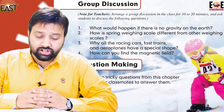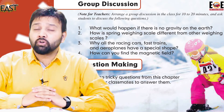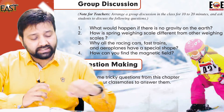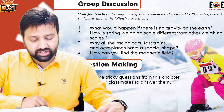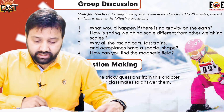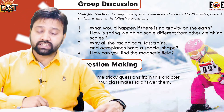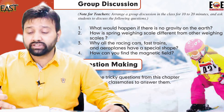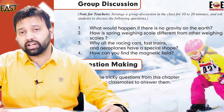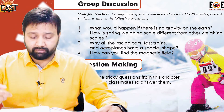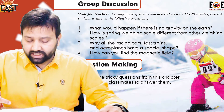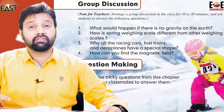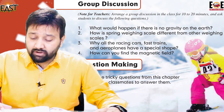So students, in this discussion section we have a total of four discussions and I have told you all the answers. Now it is time for your home assignment. This activity is related to discussion, so I want you to discuss question number one — what would happen if there is no gravity on the Earth — and question number three — why all the racing cars, fast trains, and aeroplanes have a special shape.